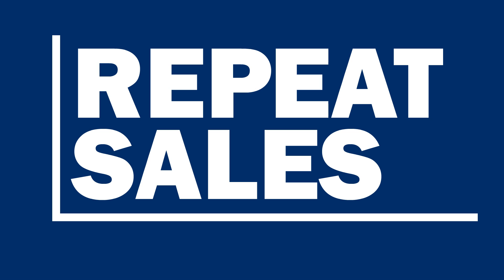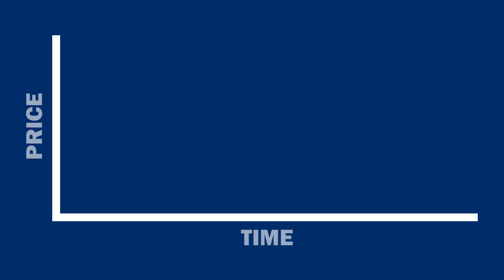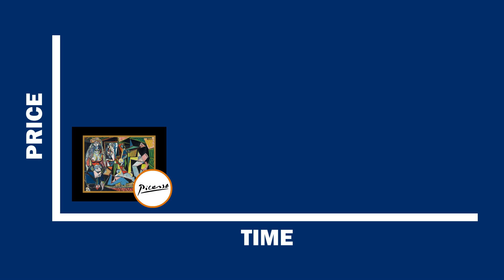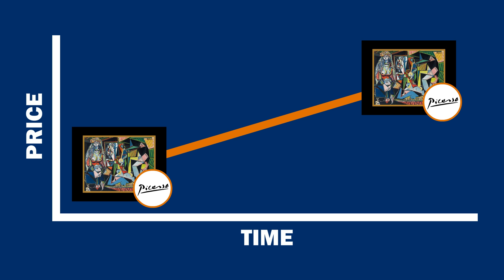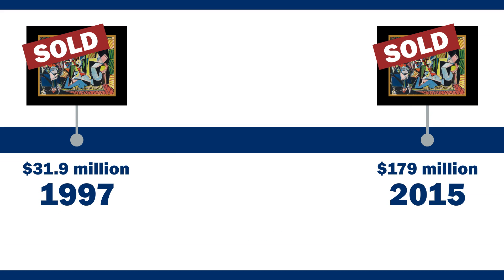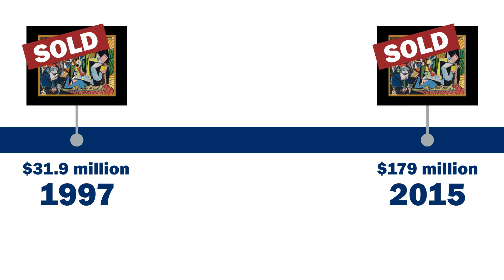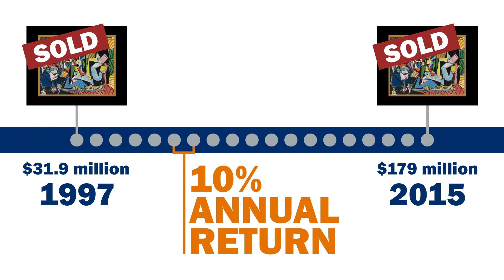One alternative way to construct an index from an illiquid asset class is the repeat sales methodology. To construct a repeat sales index, we first identify the purchase and sale of the same asset over time. If, for example, we see the same Picasso purchased and sold over time, we can correctly infer the total return earned by the owner of that painting. Even if there is a long time period between the purchase and sale, we can infer the annual return earned for that painting over that time period.